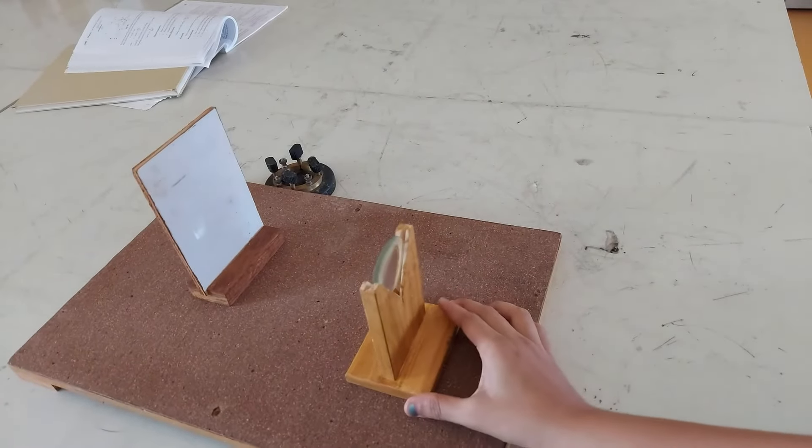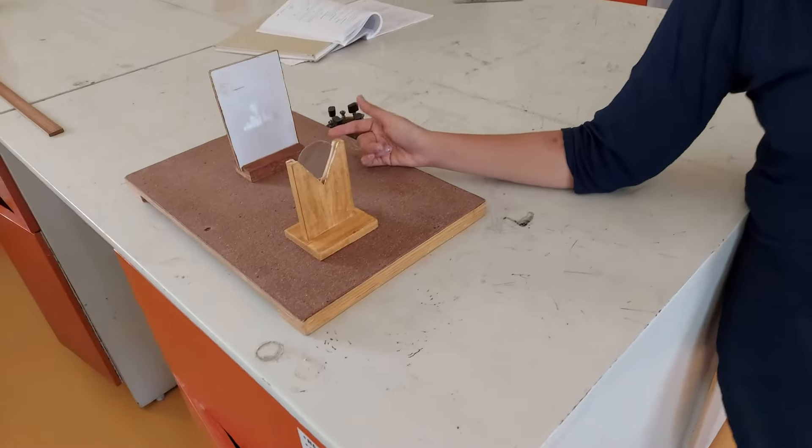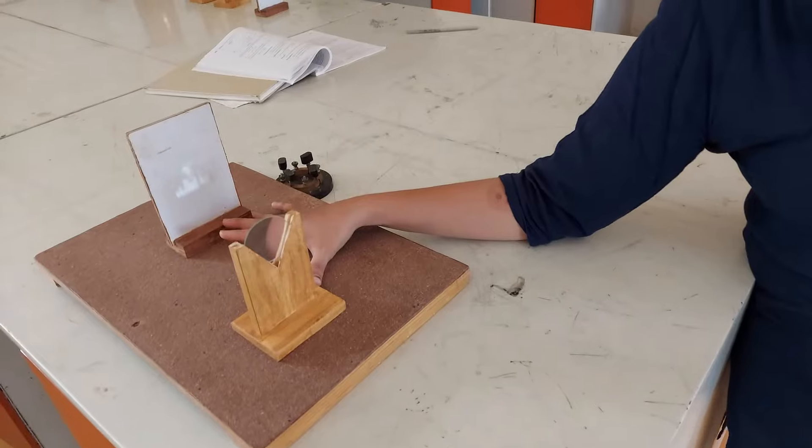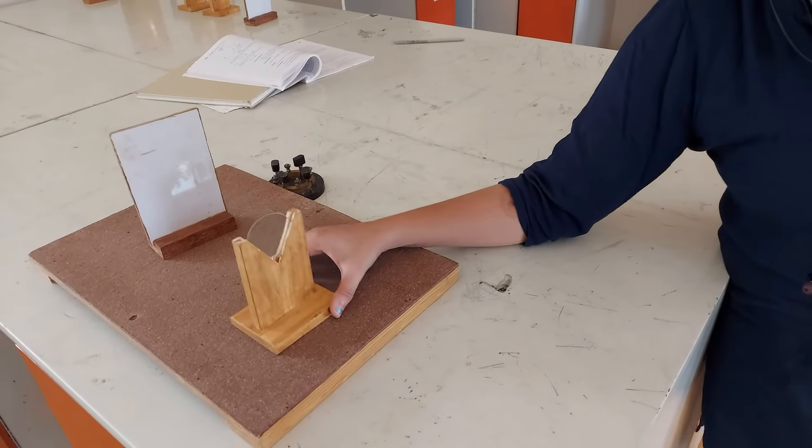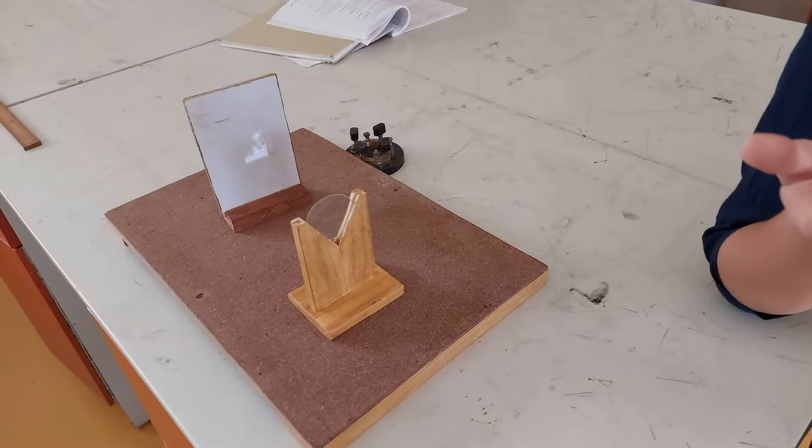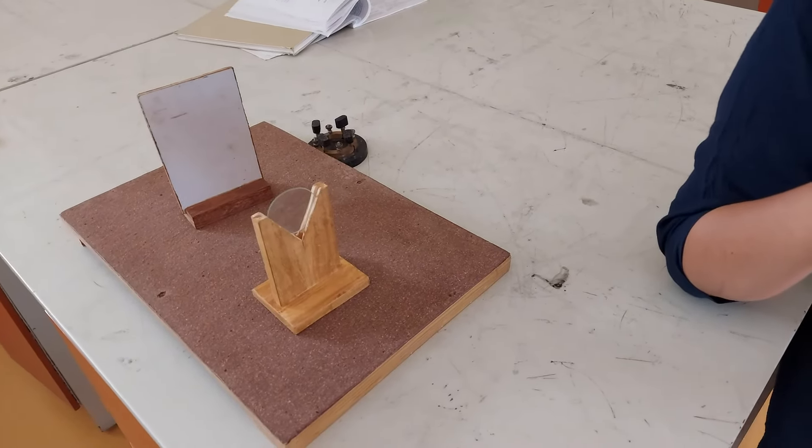Place the object at infinity, like a window. The image will form at f. Measure this distance from the lens. This will give you confirmation whether your answer is correct or not.